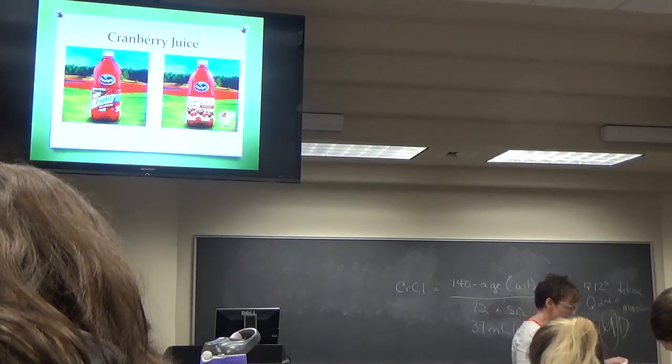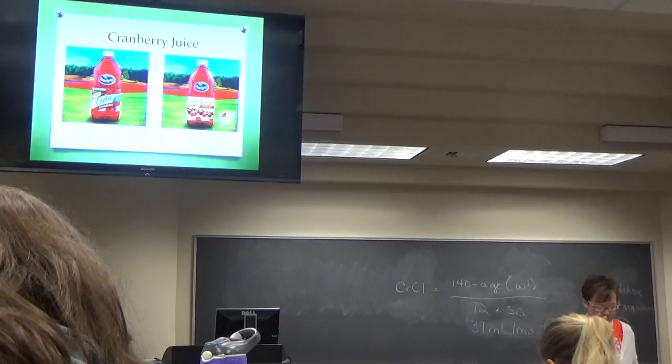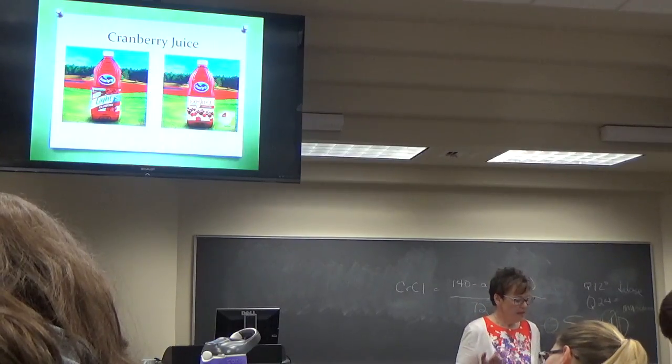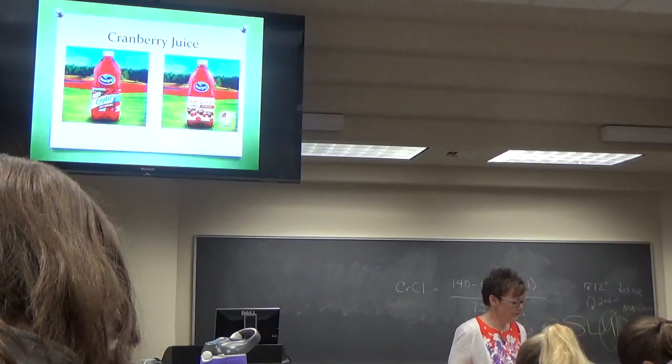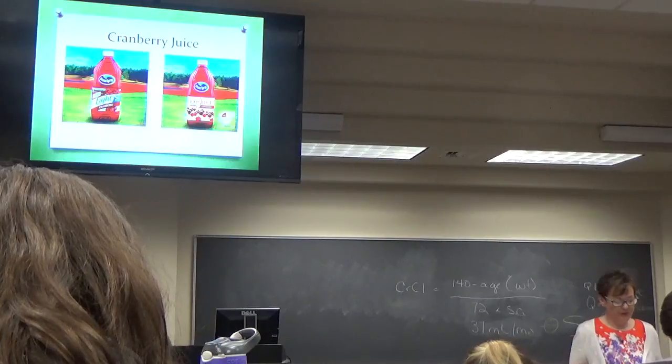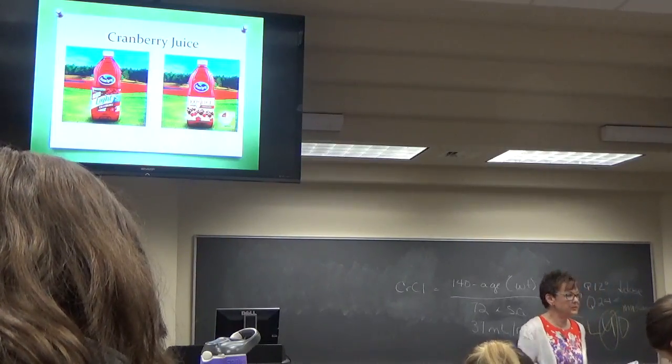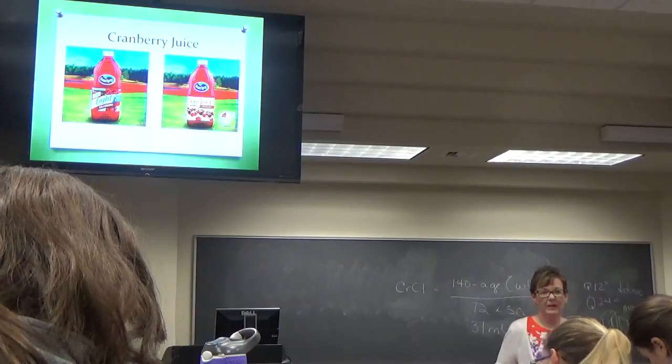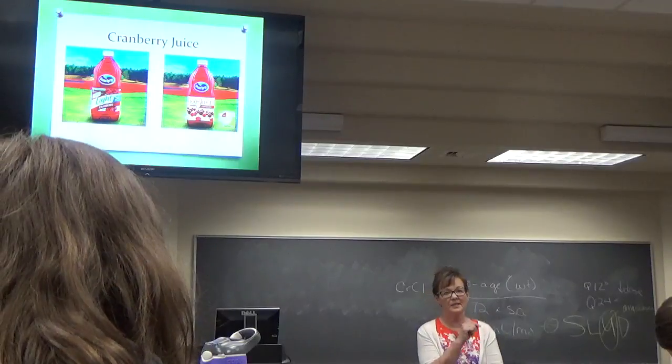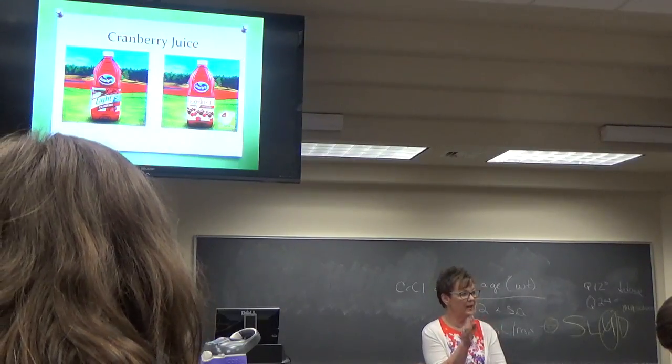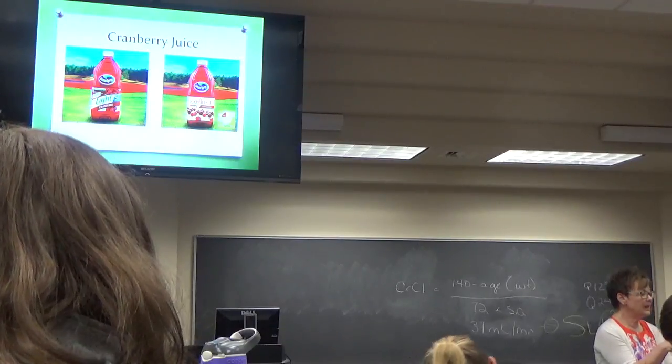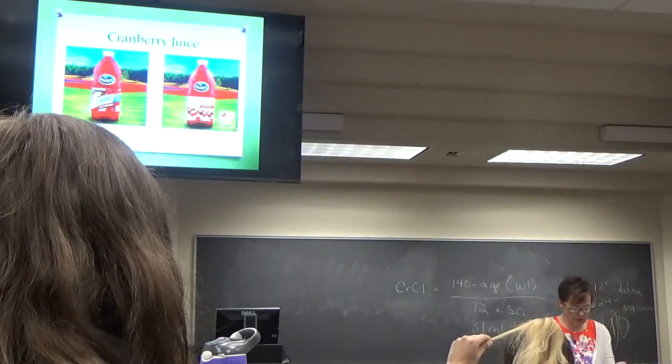Nitrofurantoin is very effective for cystitis. It concentrates very well in the bladder. It has a very low resistance pattern, and it has very low collateral damage. Perfect drug. Only has to be used twice a day for five days. Clinical cure rates in the 80 to 90 percent range. One of the problems is renal impairment. Below 30 mLs per minute, it's recommended you not use it. The manufacturer says don't use it in creatinine clearances less than 60. But there's three studies that found it to be effective in people with creatinine clearances between 30 and 60.